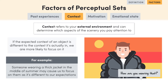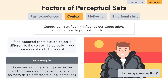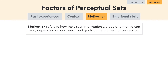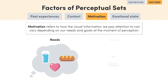So context plays an important role in influencing our expectations of what is most important in a visual scene. Now, let's move on to the third factor which can influence a perceptual set – motivation. The visual information we pay attention to can vary depending on what our needs and goals are at the moment of perception.